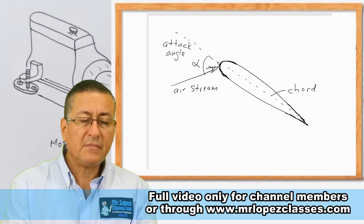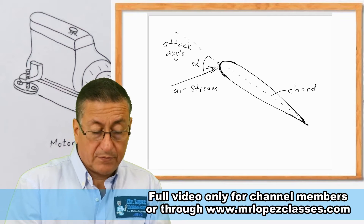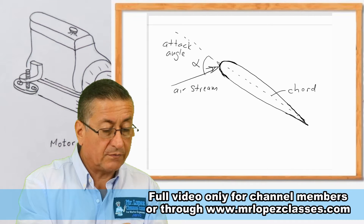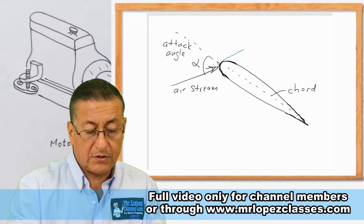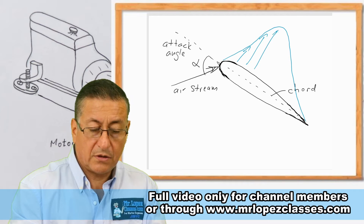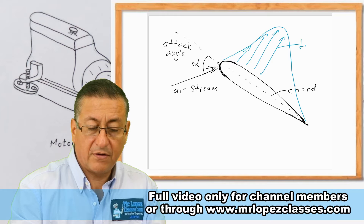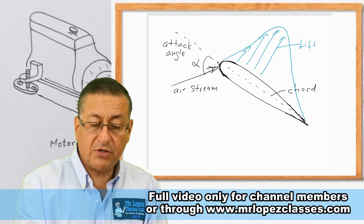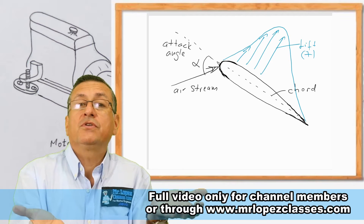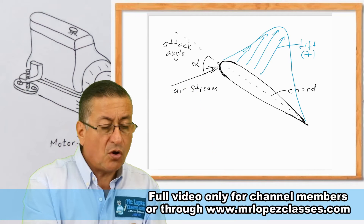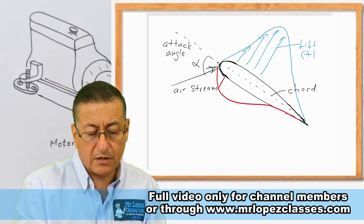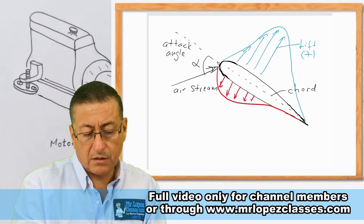The bigger the attack angle, the bigger the vertical force produced on the wing. Those vertical forces — lift or sustentation — are positive forces going upward. At the same time that lift forces are produced, other negative forces are also produced at the back. Those negative forces are called drag.